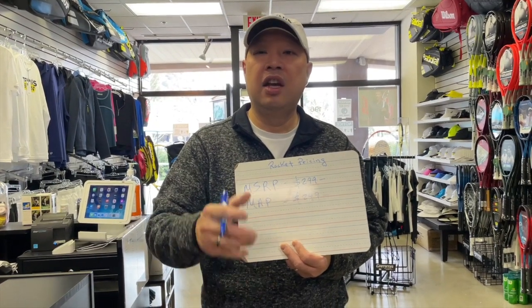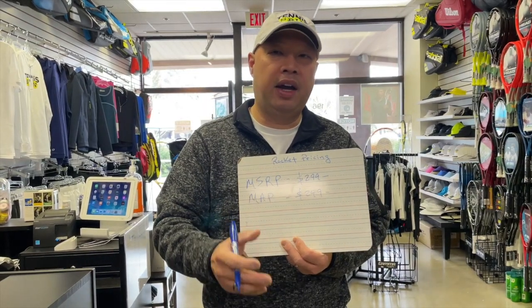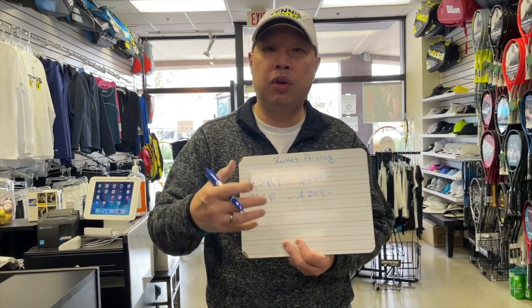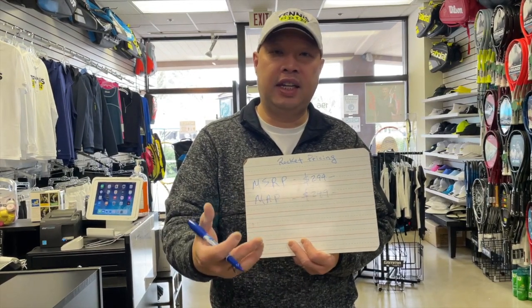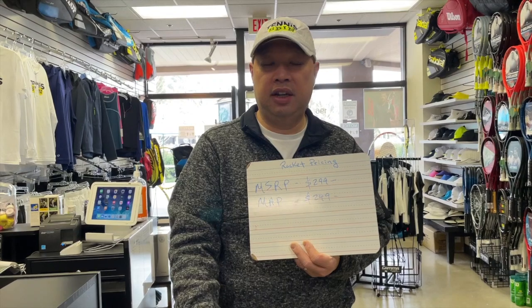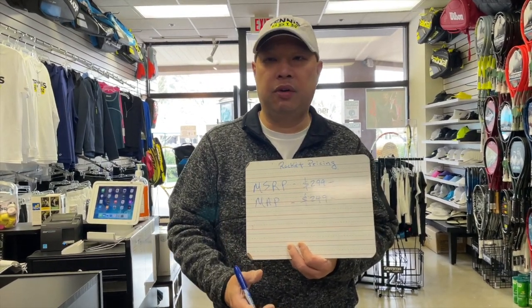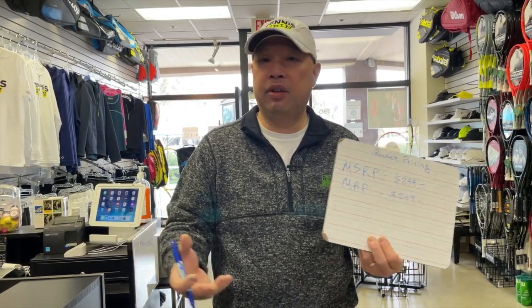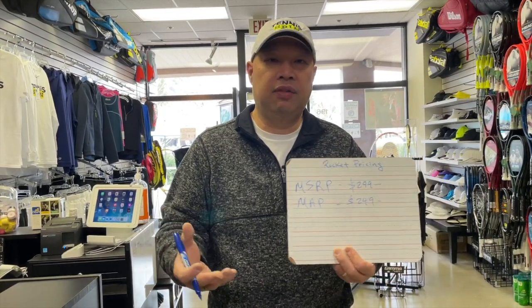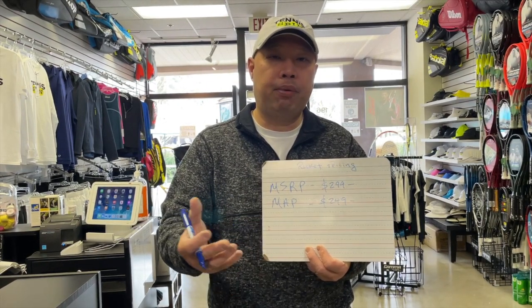That price is dictated by the manufacturer. So Wilson actually comes up with this pricing structure — Wilson says, 'We suggest you sell it for $299, but if you're running a sale you can sell it for $249.' So one day you'd go into the store and it'd be $299, and then on President's Day, 4th of July, Australian Open special, or Wimbledon special, it'd be $249 — depending on when the retailer wanted to move rackets or had too many in stock.